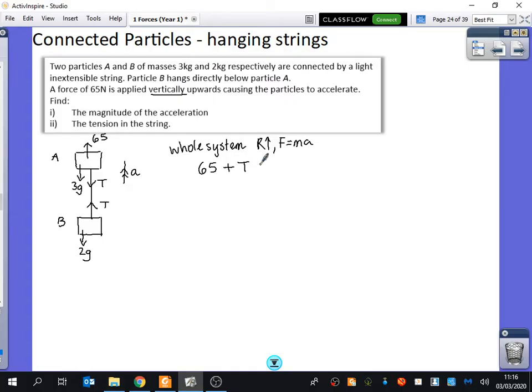So my forces upwards are 65 plus T. My forces downwards are T, 3G, and 2G. The mass of this is 5 because there is a 3 and a 2.